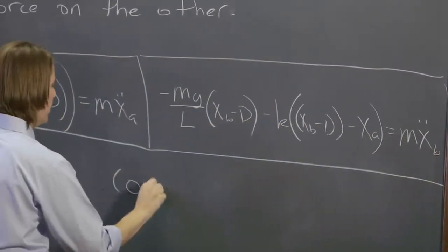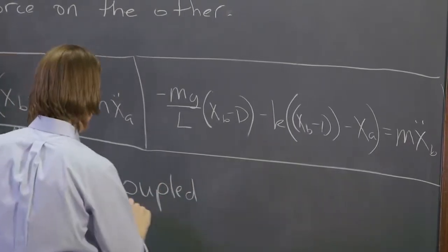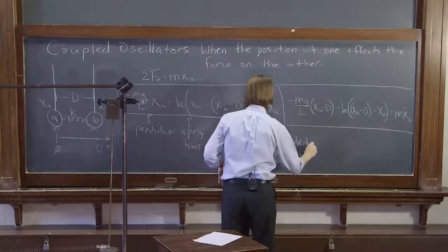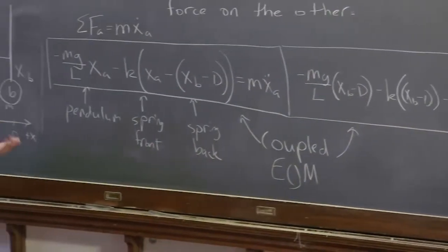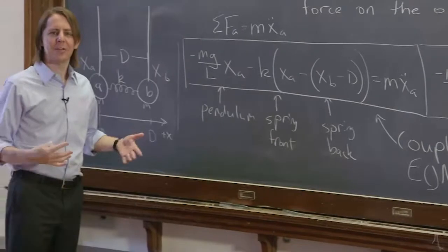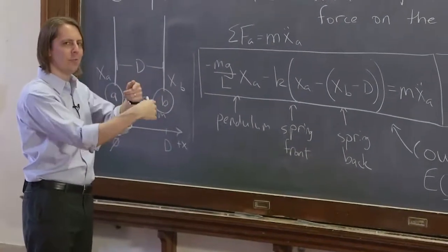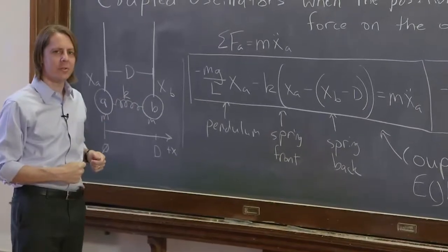So these are the coupled equations of motion, EOM as we call them. And now we just have to figure out how to solve them. How do we deal with the fact that these two equations of motion look like something we've dealt with except they're coupled. They have terms in each other's equations. We'll do that next.